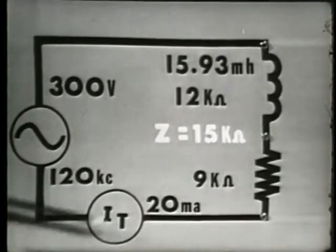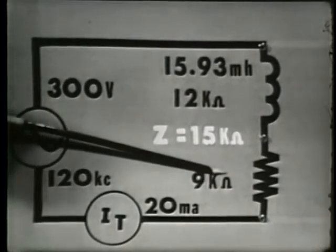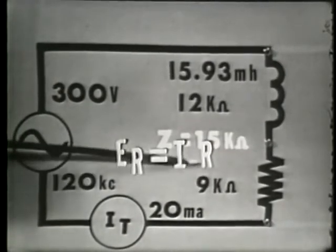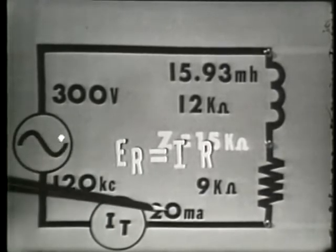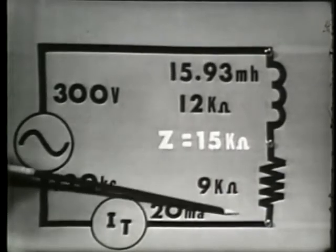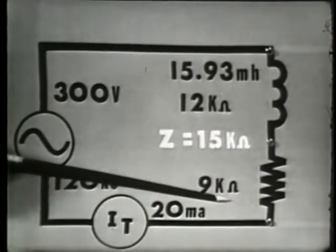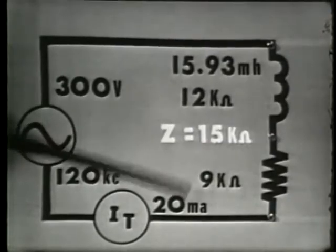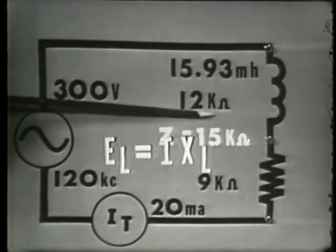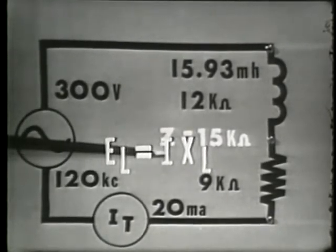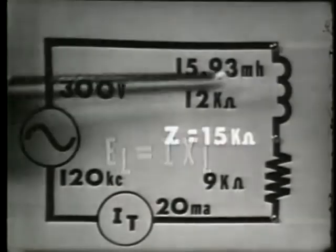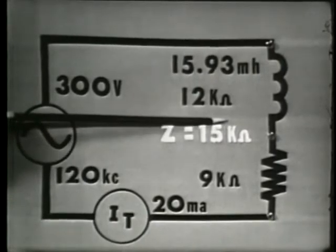This 20 milliamps must flow through the 9K ohms of resistance. Therefore, the voltage across R is equal to I times R, or 20 milliamps times 9K ohms, which is 180 volts across R. This 20 milliamps also flows through the inductive reactance — 12K ohms of our inductor — and the voltage across the inductor equals 20 milliamps times 12K ohms, or 240 volts dropped across the inductor.